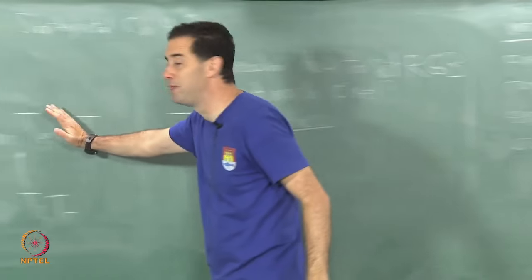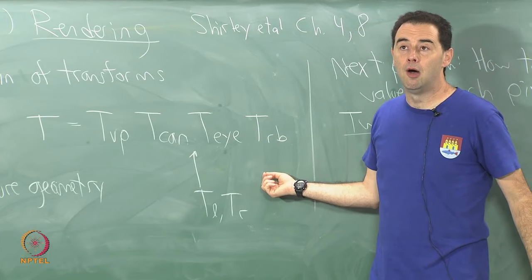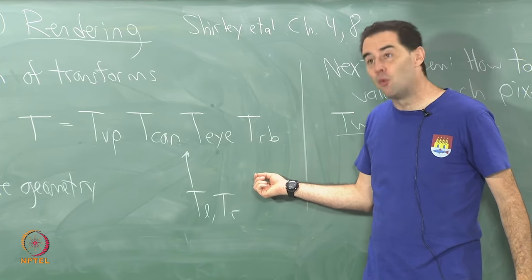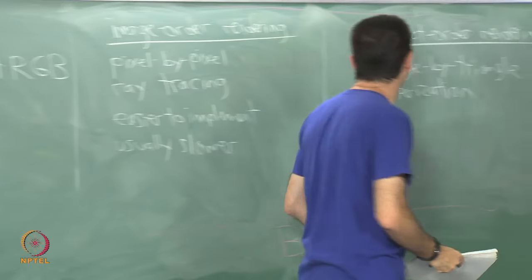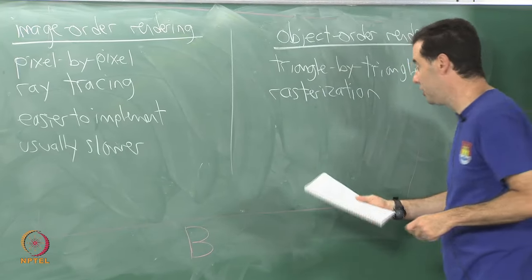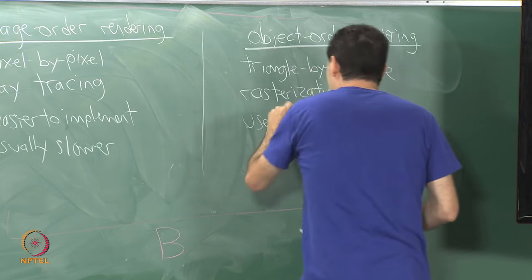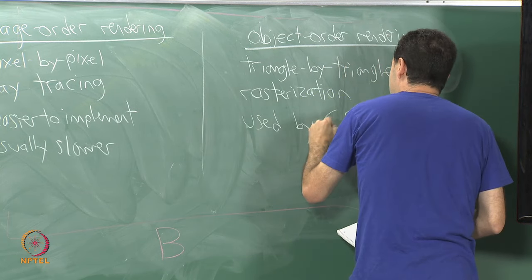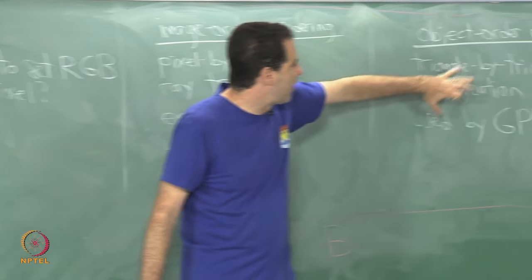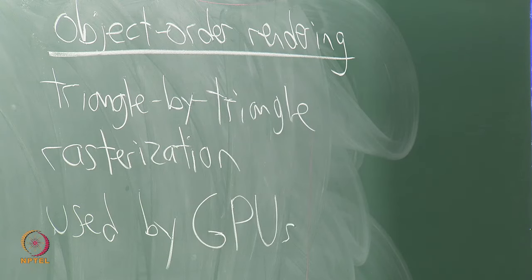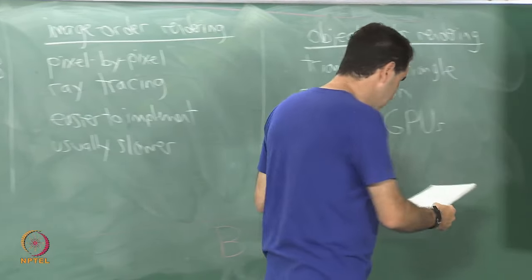So after these transformations have been applied, right, these transformations have been applied to the triangle from the original body frame that it was given in, or it may have been given in the world frame if it were stationary. Where does it end up on the screen? We perform some kind of pixelation of it in the process called rasterization. This is much harder to implement, but is what is used by modern GPUs, graphical processing units. So these, the whole graphics pipeline has been optimized for triangle by triangle computations, quick rasterization, and fast operations by these processing units. And so this ends up usually being faster.